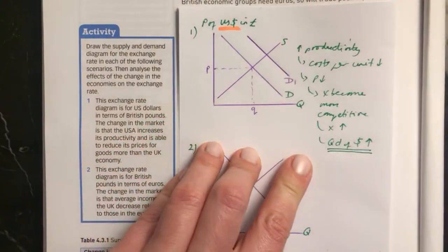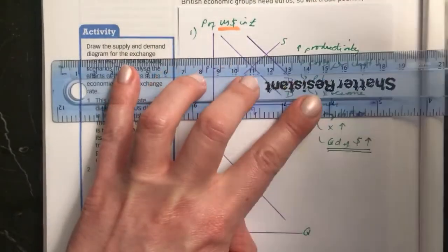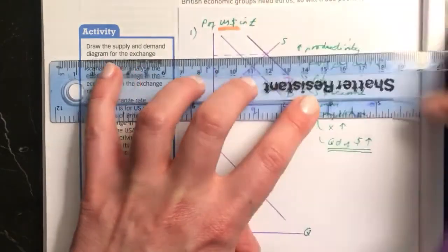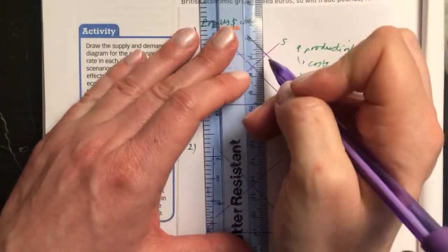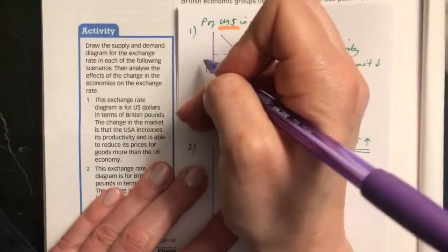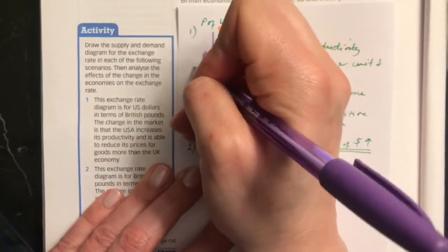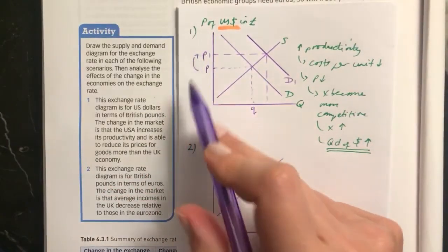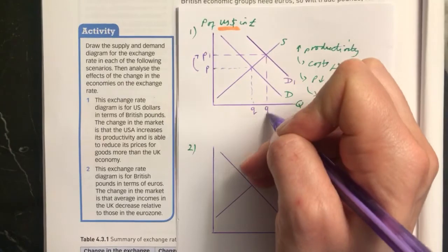So that's D1. And then you can see what's happened to the equilibrium price of the US dollar against the pound. And you can see here that it has appreciated. The US dollar against the pound has appreciated. The price has gone up from P to P1.